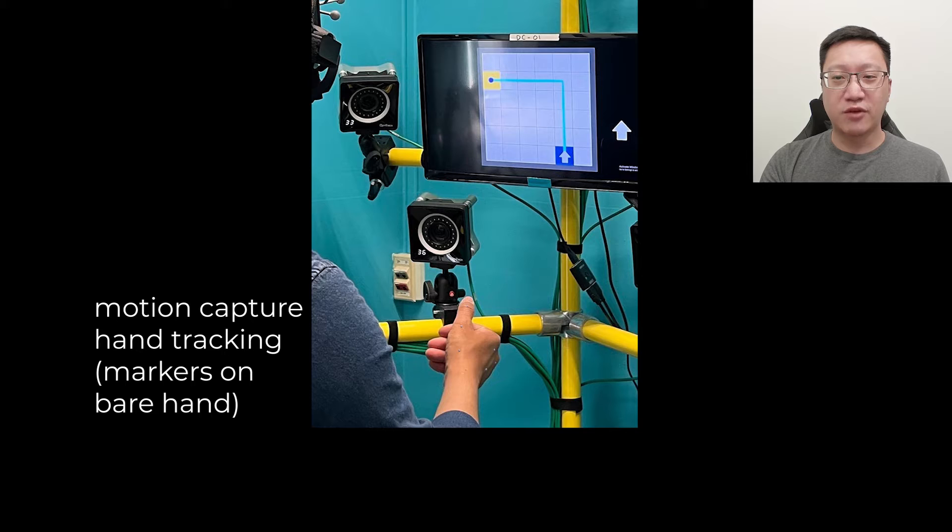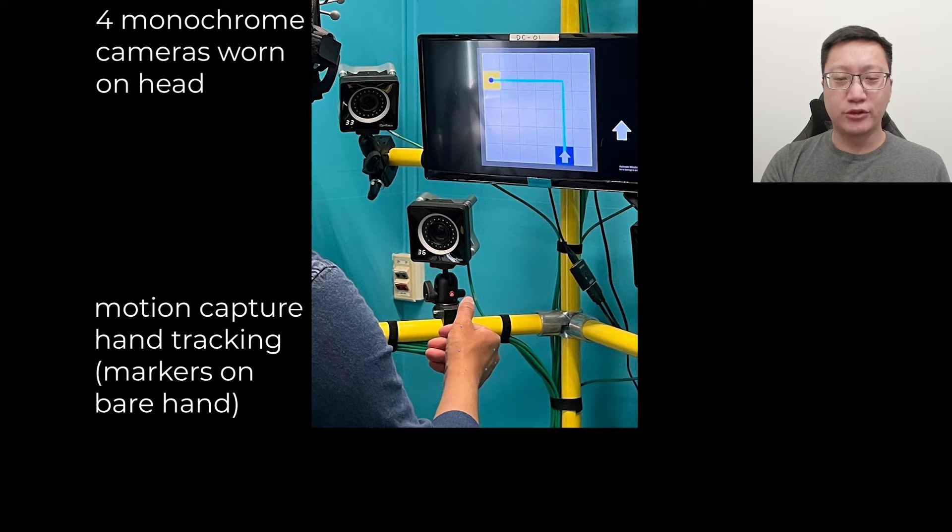Our collection setup generates hand tracking from motion capture and hand tracking from monochrome cameras. We also calibrate the space so the participant can aim a raycast cursor at the 2D monitor for certain sequences.